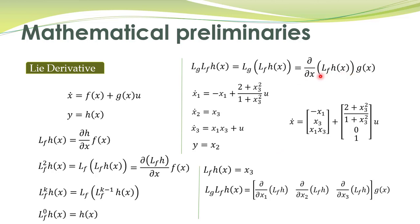Taking the same example, we have already computed the Lie derivative of h along f of x. Now we want to compute its Lie derivative along g of x. Writing this in expanded form: partial derivative of x3 with respect to x1 is 0, with respect to x2 is 0, and with respect to x3 is 1. Multiplied by g of x, where g of x is given as 0, 0, 1, the result is equal to 1. The concept of Lie derivative should now be quite clear.